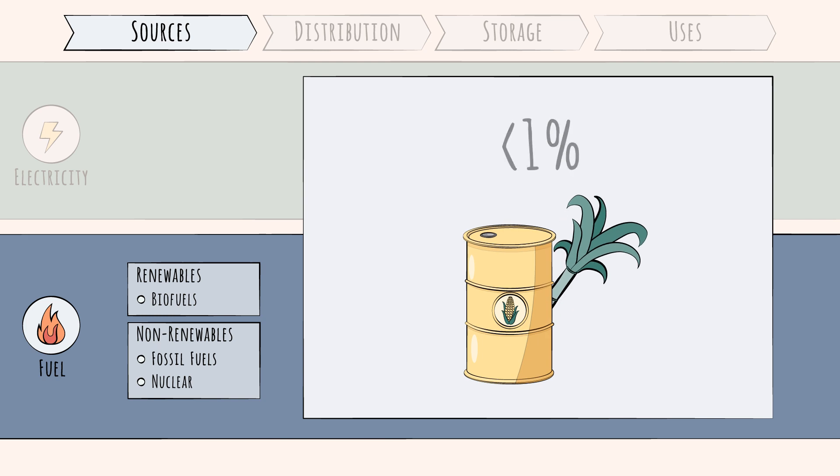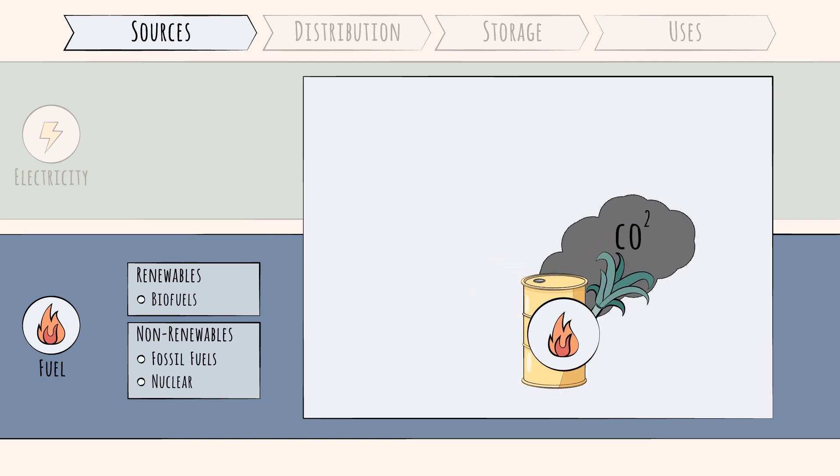Whether or not biofuels are green is a bit more complicated. Since they are combusted, they emit CO2. However, while alive and growing, biofuel crops absorb CO2 from the atmosphere, improving their net carbon impact.